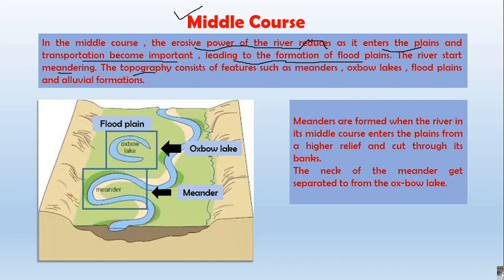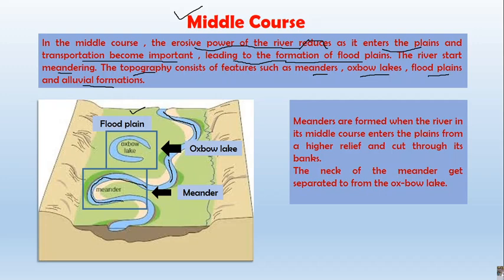In the middle course we can identify: meandering path, oxbow lakes, flat plains, and alluvium formation. The extensive flat plain is formed due to deposition of alluvium caused by annual floods. The river follows a curved path called a meander. Sometimes, due to erosion and deposition, the neck of the meander gets separated, resulting in the formation of an oxbow lake.